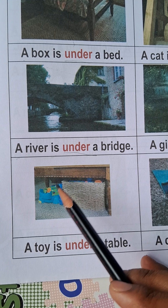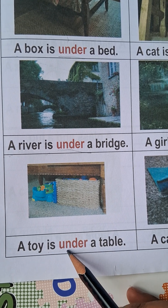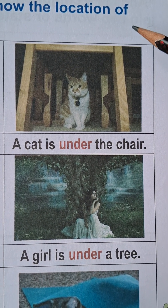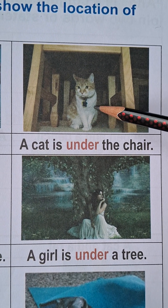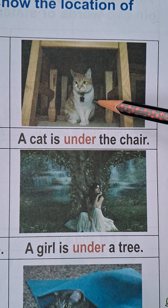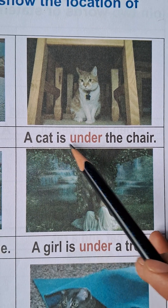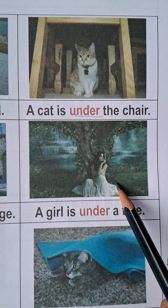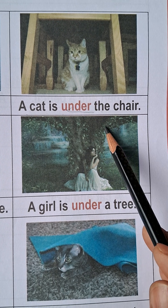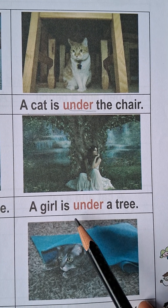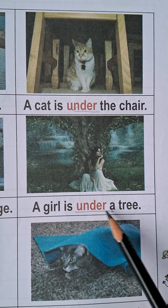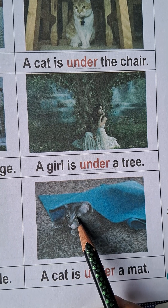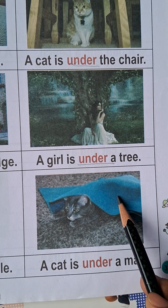A toy is placed under the table — a toy is under a table. Here in this picture there is a chair, and something is under the chair. Also in another picture, a cat is under a mat.